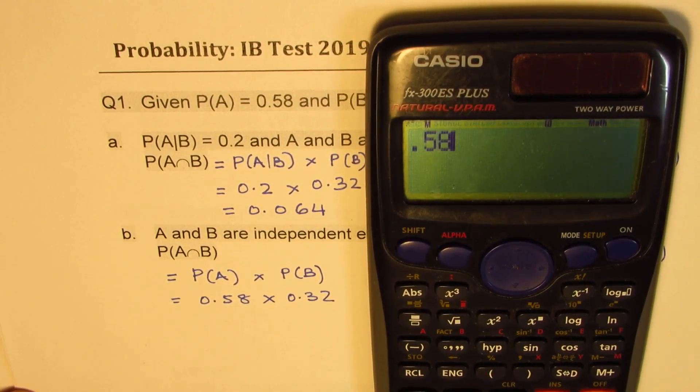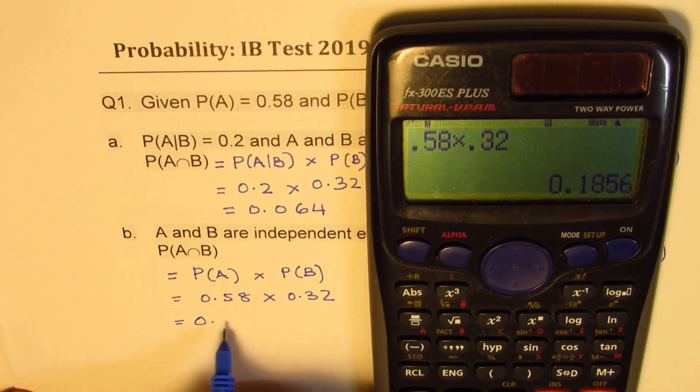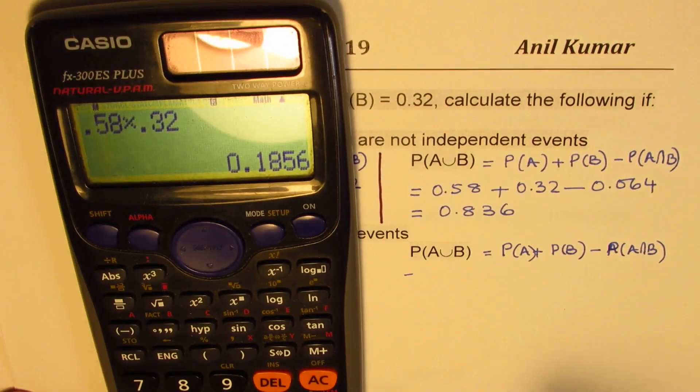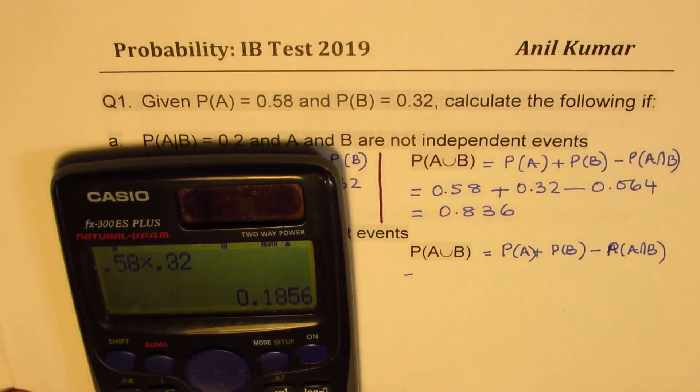So 0.58 times 0.32 equals two decimals, 0.1856. So we have to take away this from the addition of the other two.